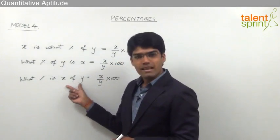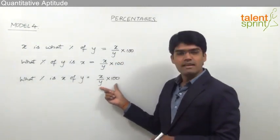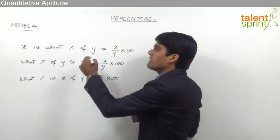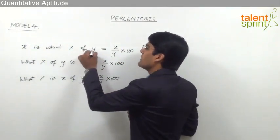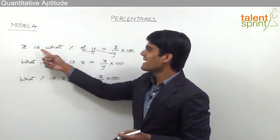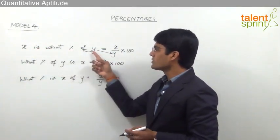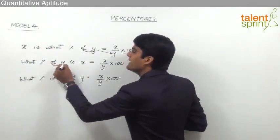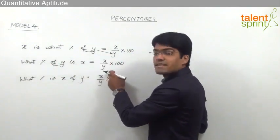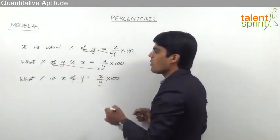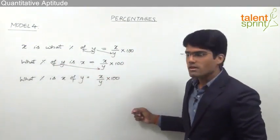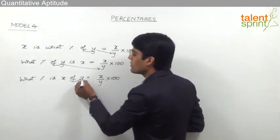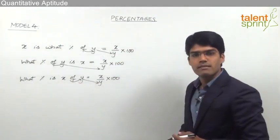It can also be phrased as: what percent is x of y? The answer again is x by y into 100. One simple way to remember the formula is that whatever is followed by 'of' should always be taken in the denominator. For example, x is what percent of y — that y goes in the denominator. Similarly, what percent of y is x — y goes in the denominator. And what percent is x of y — 'of' is followed by y, so y is taken in the denominator.